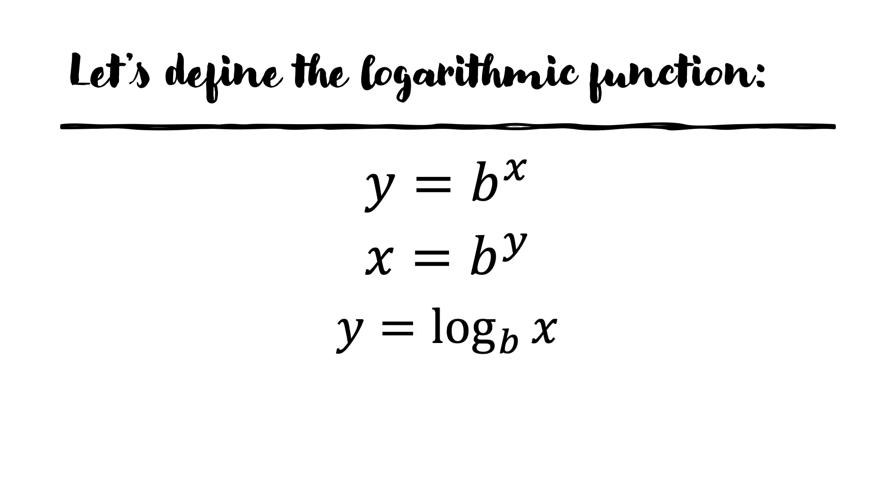It says that if x equals b to the power of y, then y equals the logarithm of x base b. Now what are the implications of this? Let's look at the previous example and see if we can apply this to solve it. Here we rewrite the original equation as a logarithmic equation based on its definition. That gives us x equals log of 4 base 3.